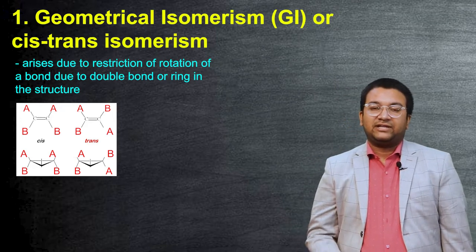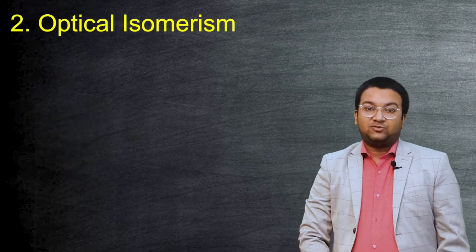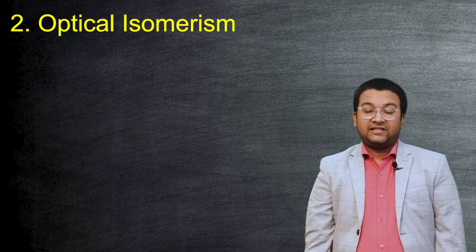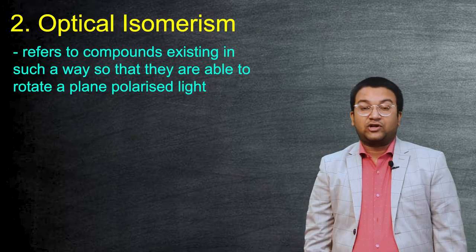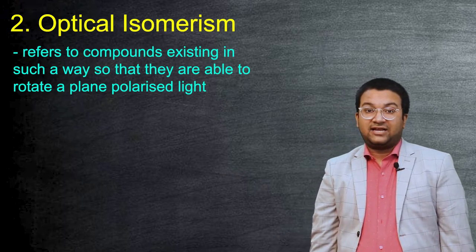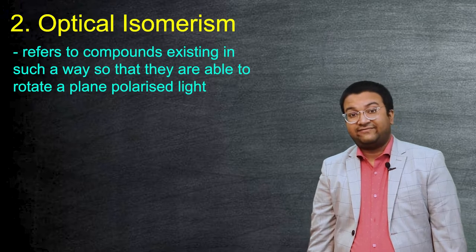The next type of isomerism is optical isomerism. In optical isomerism we see that certain compounds in organic chemistry exist in such a way that they can rotate a plane polarized light into either the right or the left direction.